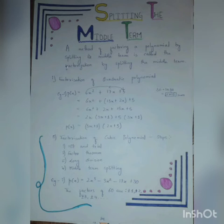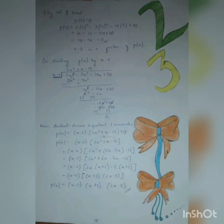And then comes Splitting The Middle Term. A method of factoring of polynomial by splitting its middle term is called the Factorization by splitting the middle term. There are Factorization of Quadratic Polynomial and Factorization of Cubic Polynomial. And I have given the examples of both.